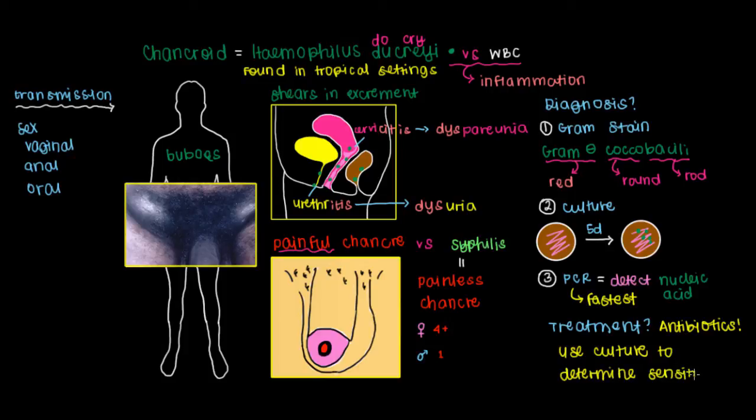We use the culture to determine sensitivity, and what that means is that when we do this culture test, we can put a little bit of this antibiotic here to see how the Haemophilus ducreyi will grow in response to it. Maybe we'll also put another antibiotic up there to compare. Over time we'll see that the Haemophilus ducreyi grew up here where we had antibiotic two, whereas antibiotic one that we smeared down here had no growth of the chancroid bacteria around it, which means this will be the antibiotic of choice for us to treat the infection.